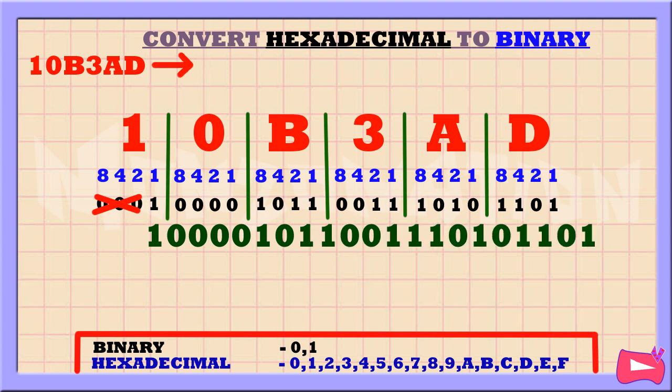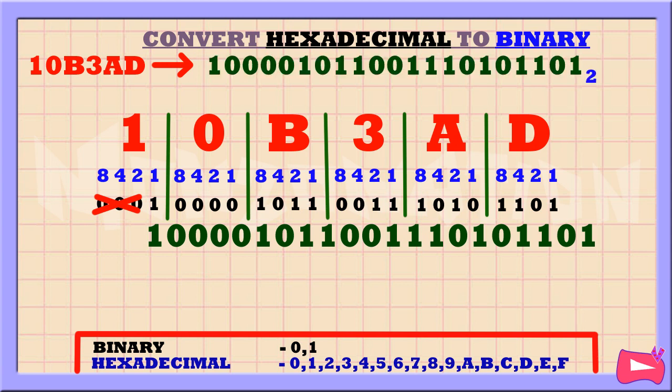The binary equivalent of 10B3AD is 100001011001110101101101 base 2. We write a little 2 down here to indicate that this is a binary number, base 2.